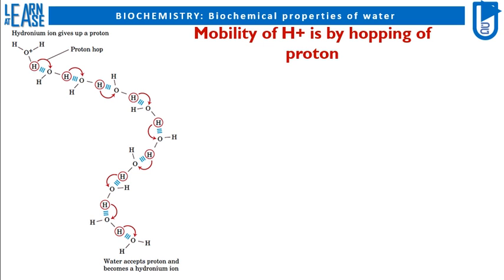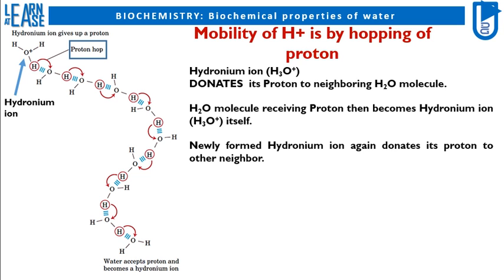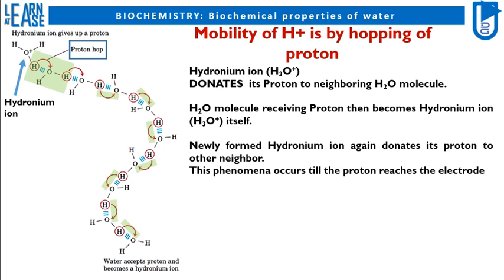The image of proton hopping is shown on the left. The hydronium ion H3O plus donates its proton to a neighboring H2O molecule. The H2O molecule receiving the proton becomes a hydronium ion H3O plus, highlighted in light green in the image. The newly formed H3O plus hydronium ion again donates its proton to another neighbor, as shown with light green highlights, and this phenomenon continues until the proton reaches the negative electrode.